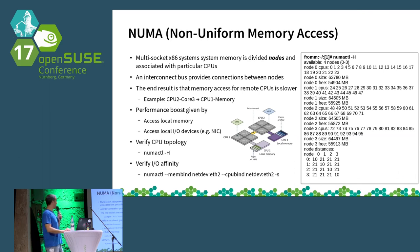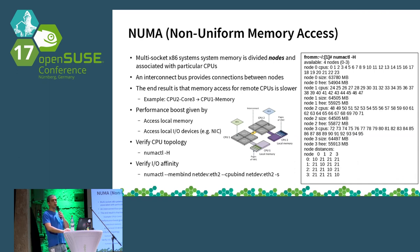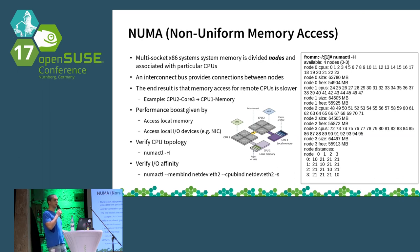A very good tool on Linux for this is numactl, which shows you the topology of your machine — which cores are on which nodes, how much memory is attached to each node, and which node handles which PCI devices. In the example shown, there are four nodes with 24 cores each. The distance matrix shows the cost of crossing nodes: the diagonal is 10 (same node costs nothing), while going from node 1 to node 2 costs 21 — more than double — because you're going through the bus that connects the two nodes.